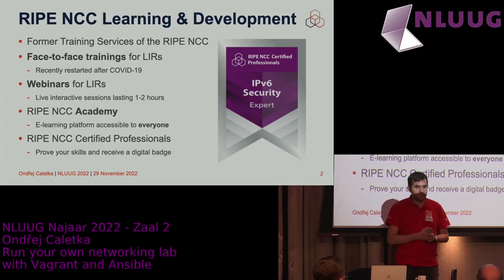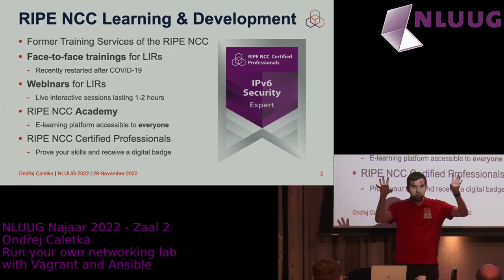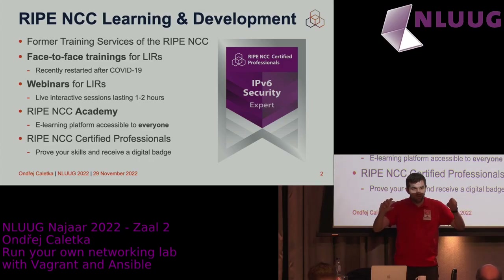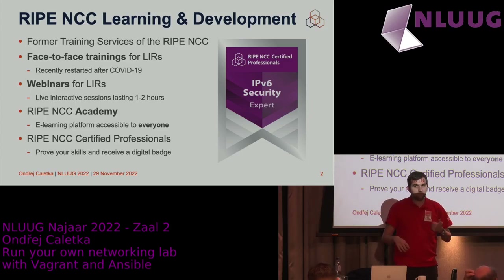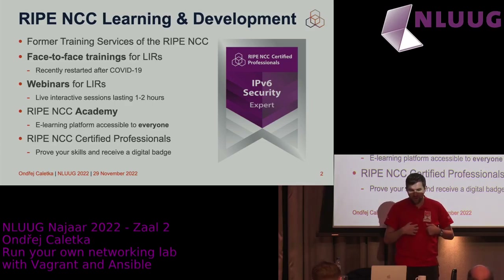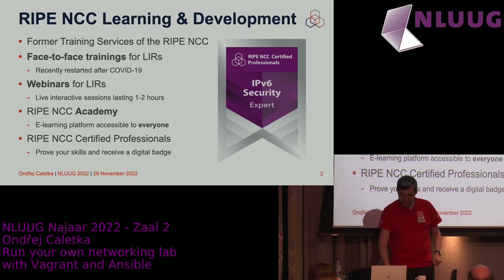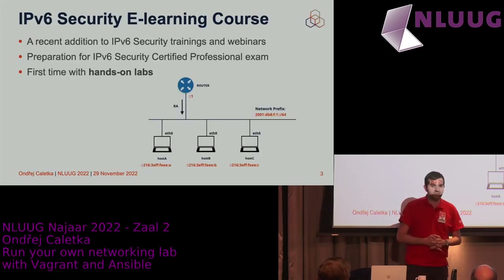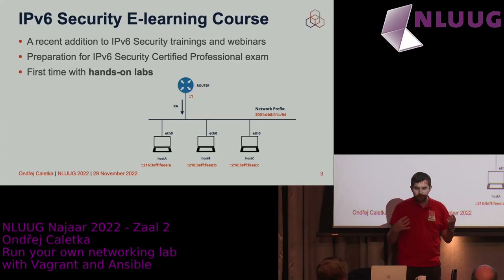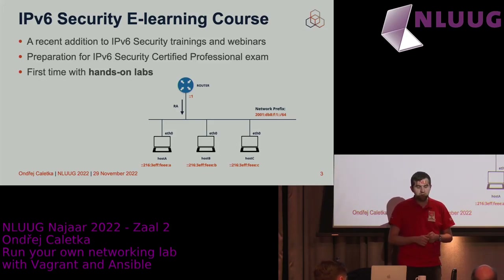LIRs — Local Internet Registries — are members of RIPE NCC. The internet works in a hierarchy: on top is IANA, divided into five regional internet registries, which further divide resources into local internet registries. For the purposes of this presentation, we don't need to dig into that detail. What I'm going to talk about is the two new e-learning courses: IPv6 Security and BGP Operations and Security.